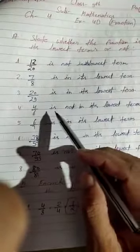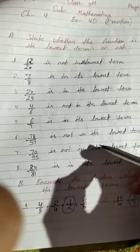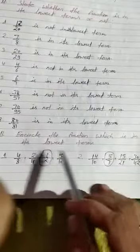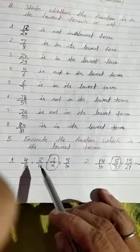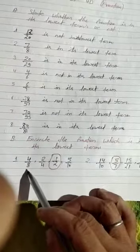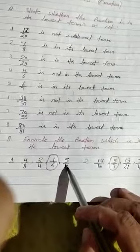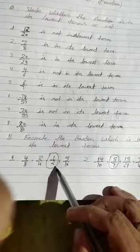In this way we can find if the fraction is in lowest terms or not. The second question of this exercise is: encircle the fraction which is in its lowest terms. 4 upon 8, if we simplify, becomes 1 upon 2. 5 upon 10 simplifies. 1 upon 2 is in lowest terms, so we circle it.